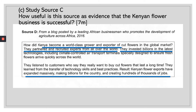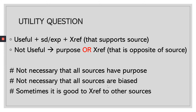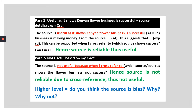The next question is a utility question asking how useful the source is as evidence that the flower business is successful. Words like 'world class,' 'recruited and partnered with experts from all over the world,' and 'the government has invested billions of dollars' show success. For a utility question you must cross-reference: if the source is useful, your cross-reference must support it; if not useful, find something opposite or look at purpose.